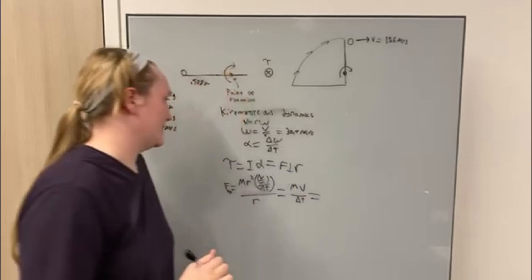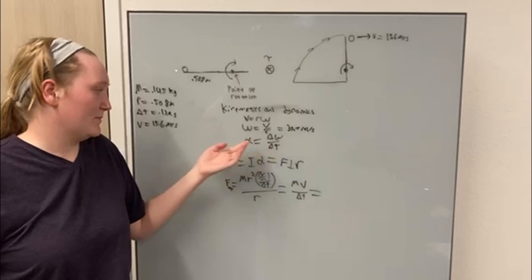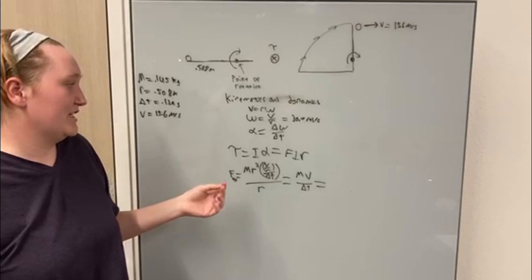And using the change in angular velocity over time, we can find the angular acceleration. Because the ball starts from rest, we know that the change in the angular velocity is just 30.7 radians per second.